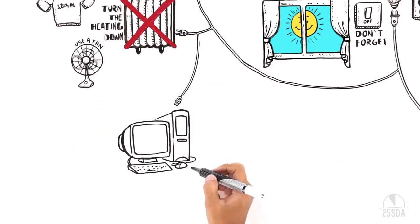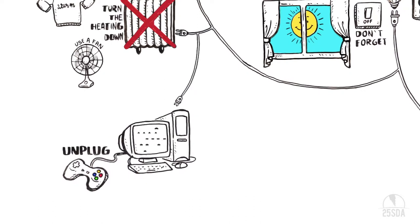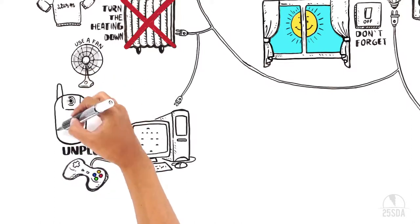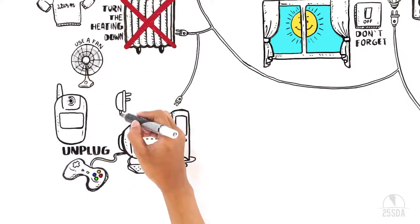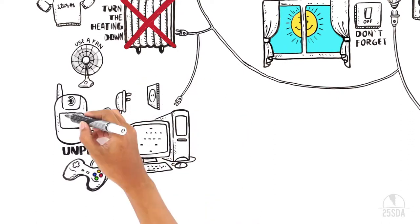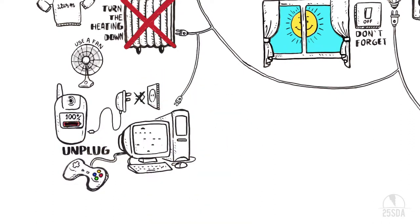When you're not using them, why not unplug some machines like computers, TVs, radios, and video game systems? Something we all need to know: even after charging your phone, your charger will continue to use energy. So unplug it.